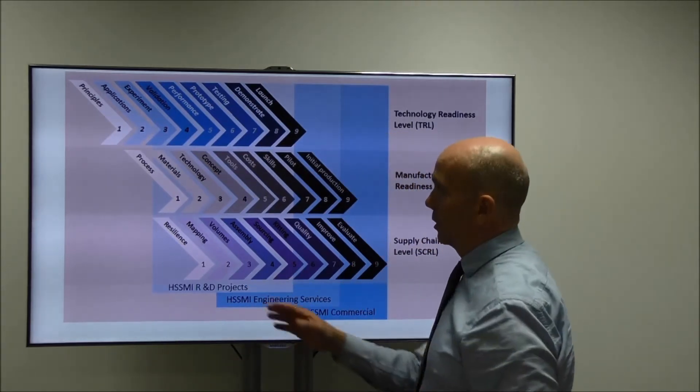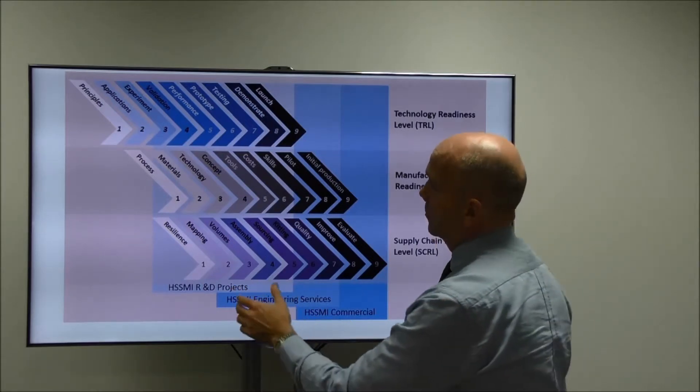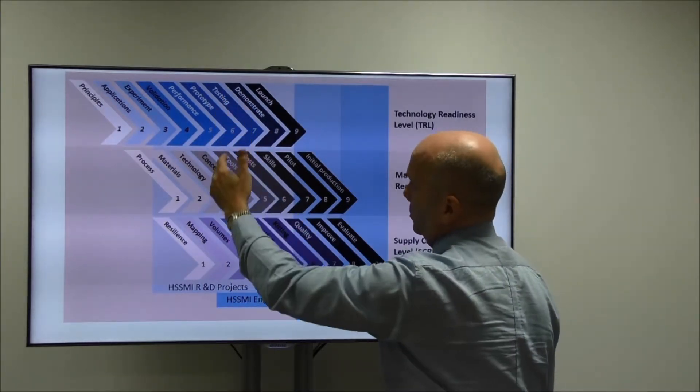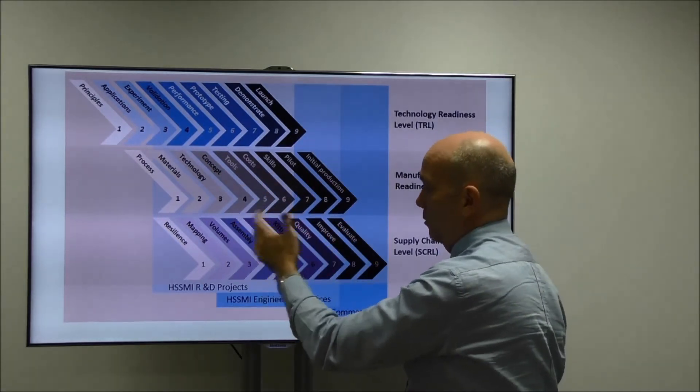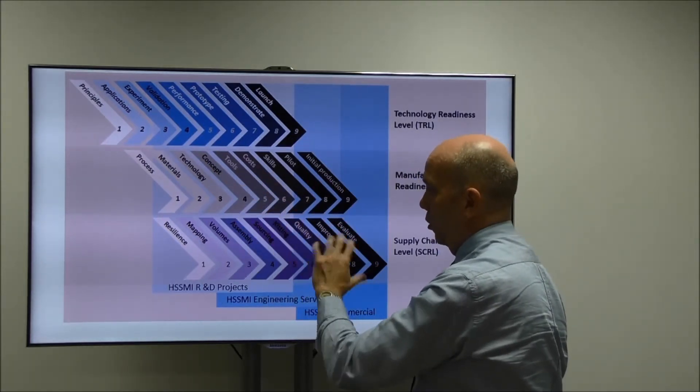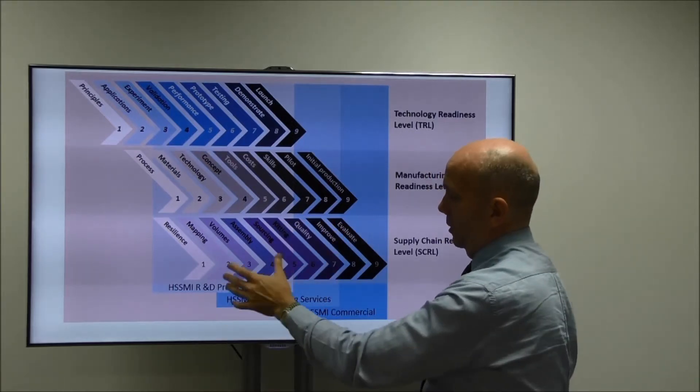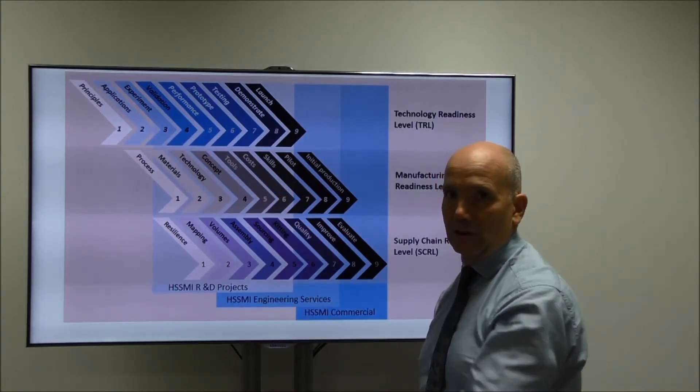Further to the right when we're looking at engineering services, we're then looking at perhaps we have a prototype already, we need to see how we tool to manufacture that prototype, how we will assemble it and what quality we want to deliver. So we'll typically look at that kind of area through engineering services projects.